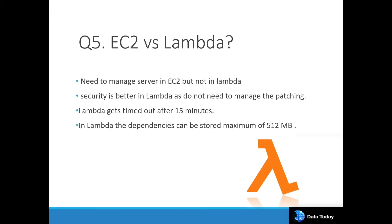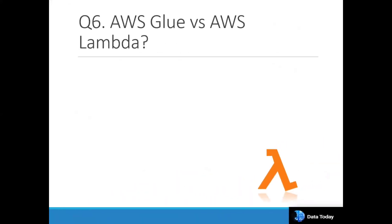The next question is: what is the difference between EC2 and Lambda? Essentially, you are differentiating serverless and managed computing, because EC2 is managed computing and Lambda is serverless. In EC2 you need to manage the server, but not in Lambda — you just create a Lambda function and start using it. Lambda is also more secure because AWS manages its security, while in EC2 you need to install patches manually or via Fleet Manager. Lambda times out after 15 minutes, but EC2 is a managed server you stop or terminate whenever you want. Lambda dependency storage is maximum 512 MB, but with EC2 you can add storage using EBS or other options.